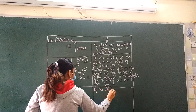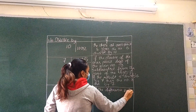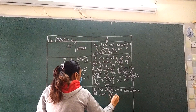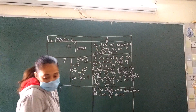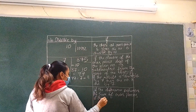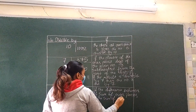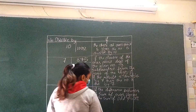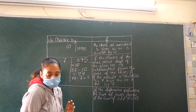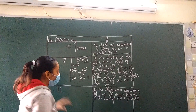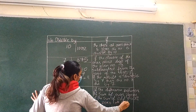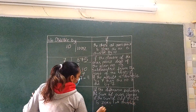If the difference between the sum of the even places and the sum of the odd places is zero or divisible by 11, then the number is divisible by 11.